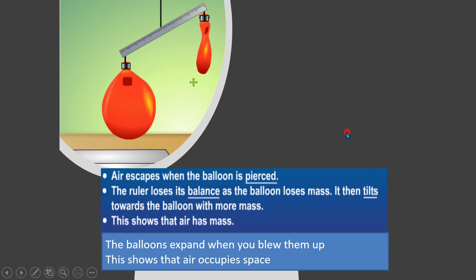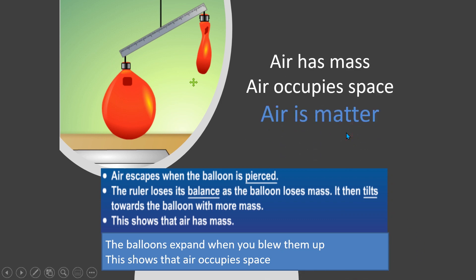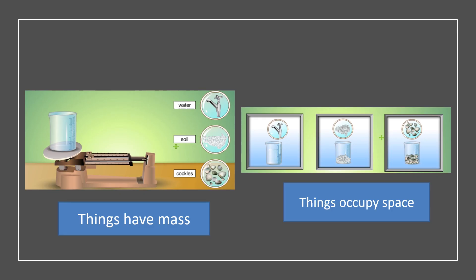Air has mass and air occupies space. Therefore, air is matter. Other than air, most things in the world also have mass and they also occupy space, so they are matter.